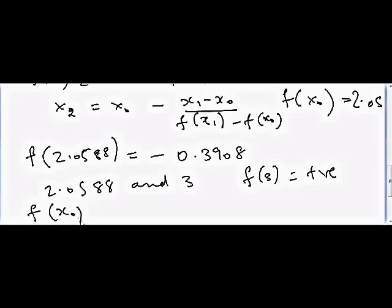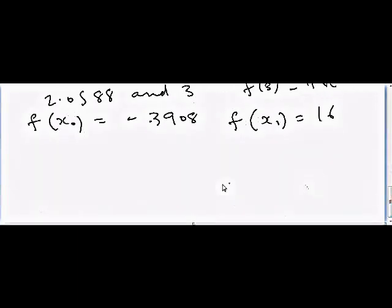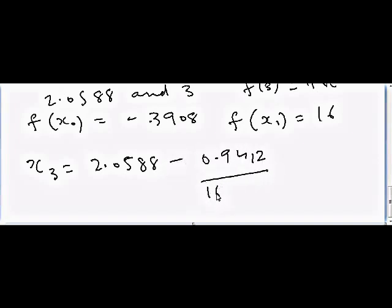So f of x zero is equal to negative 3.3908 and f of x one is equal to 16. Then we can solve again for x3, which is equal to 2.0588 minus 0.9412 divided by 16.3908, and that will multiply by minus 0.3908. The answer will be equal to 2.0813.